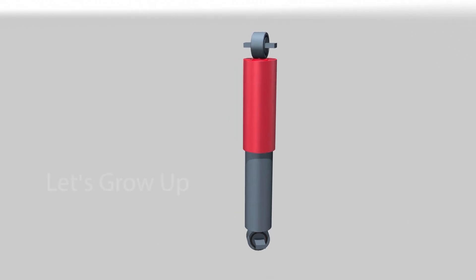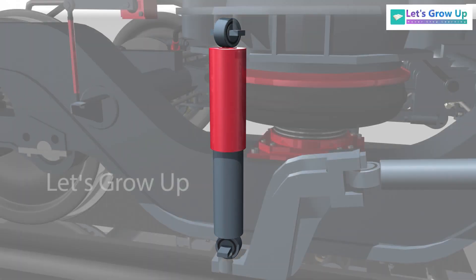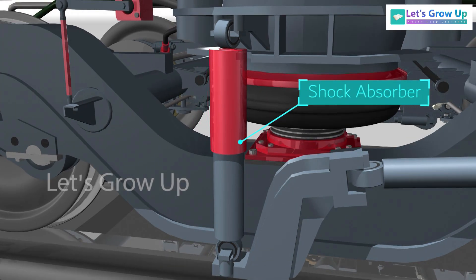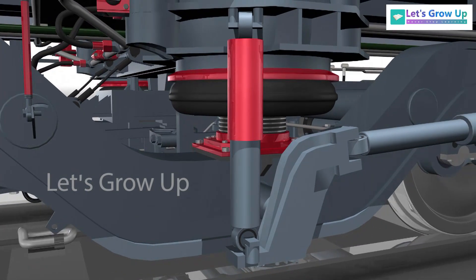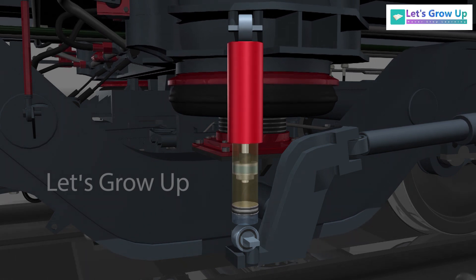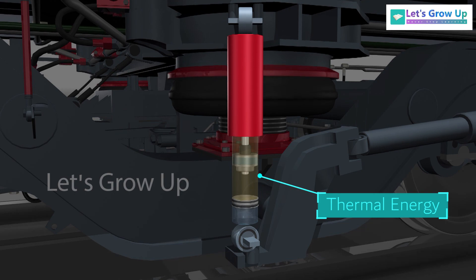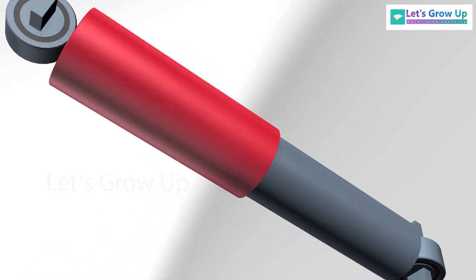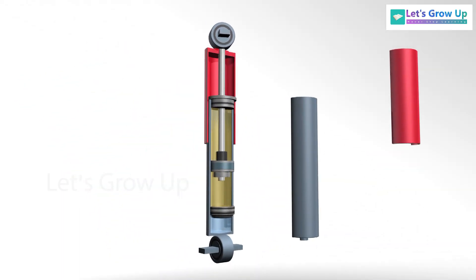Dampers are an important component of any vehicle suspension system. It is also called a shock absorber. It is used to reduce vehicle body vibration. During its operation, the kinetic energy originating from the body fluctuation is converted into thermal energy. In this video, we will learn about dampers, its structure, and working system.